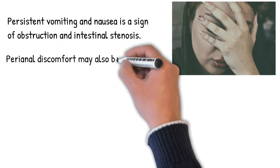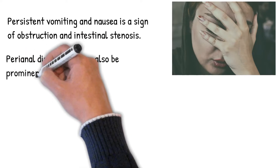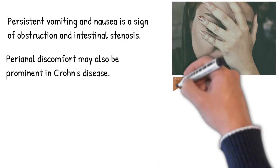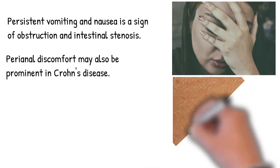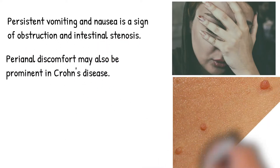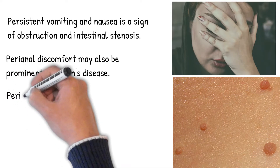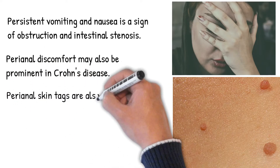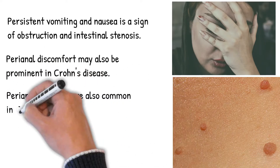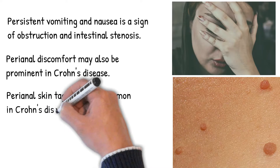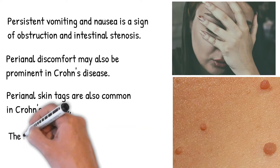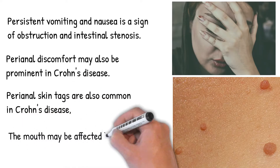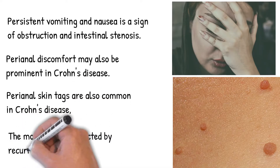Perianal discomfort may also be prominent in Crohn's disease. Itchiness or pain around the anus may be suggestive of inflammation, fistulization, or abscess around the anal area, or anal fissure. Perianal skin tags are also common and may appear with or without the presence of colorectal polyps.